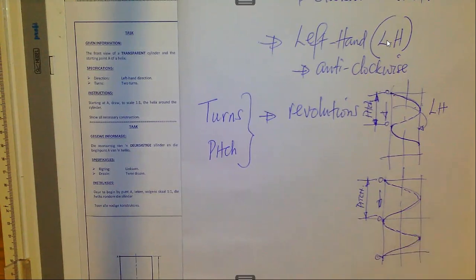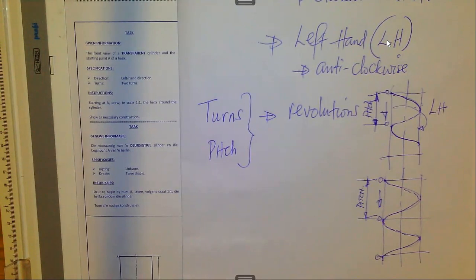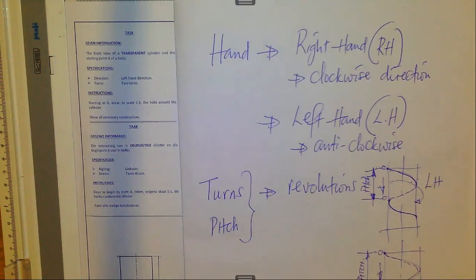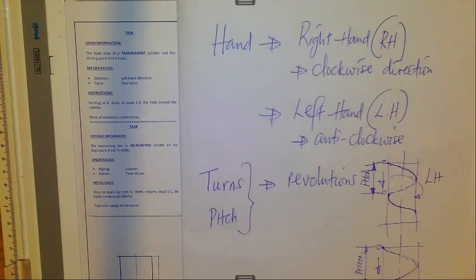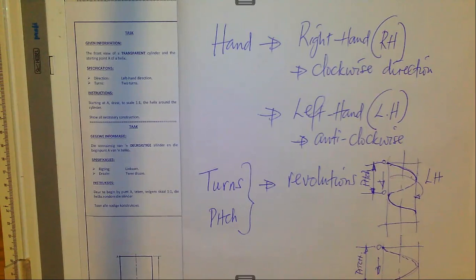I have now covered the key terms describing the concept of the helix. Remember, we said that the helix is the path followed by a point as it moves around and along the surface of a cylinder. We also defined the concept of locus, which is the path itself followed by a point. Then we looked at the hand — right hand is plotted clockwise in the top view, and left hand is plotted anticlockwise. There are certain other considerations we will see as we start the actual drawing.